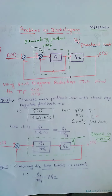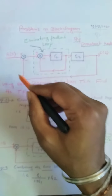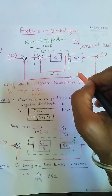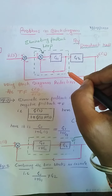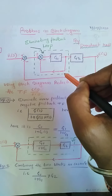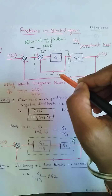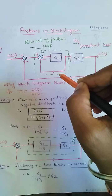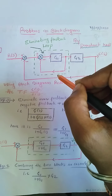Let us take one simple example on the block diagram. Here the control system is represented by a block diagram. We know that the block diagram is a pictorial representation of each and every component in the control system. Before solving any block diagram, we need to check the blocks in series, the blocks in parallel, and the blocks in a loop.